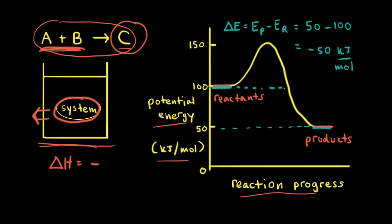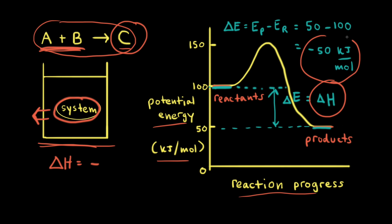So on our energy profile, we can show delta E, which is this difference right here. The change in energy delta E is also equal to the change in enthalpy delta H for this reaction. So we know that the change in enthalpy is equal to negative 50 kilojoules per mole. By feeling the outside of the beaker we knew the reaction was exothermic, but the energy profile allowed us to figure out how much energy was transferred from the system to the surroundings.